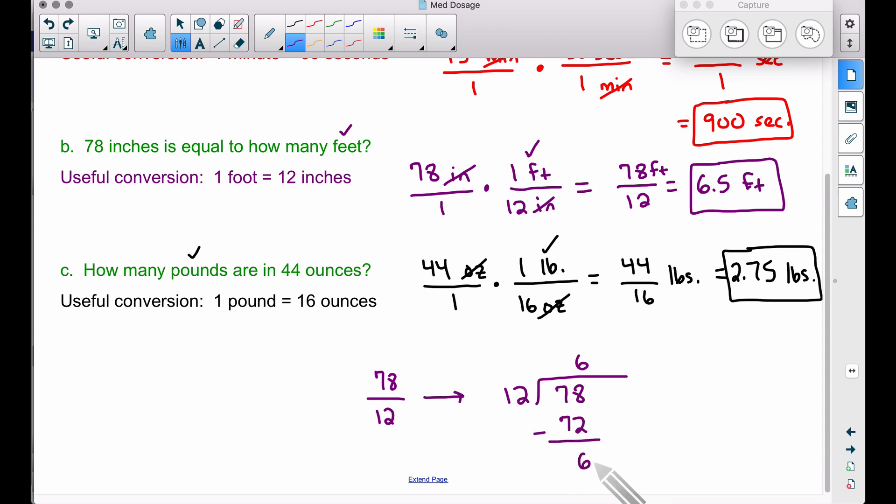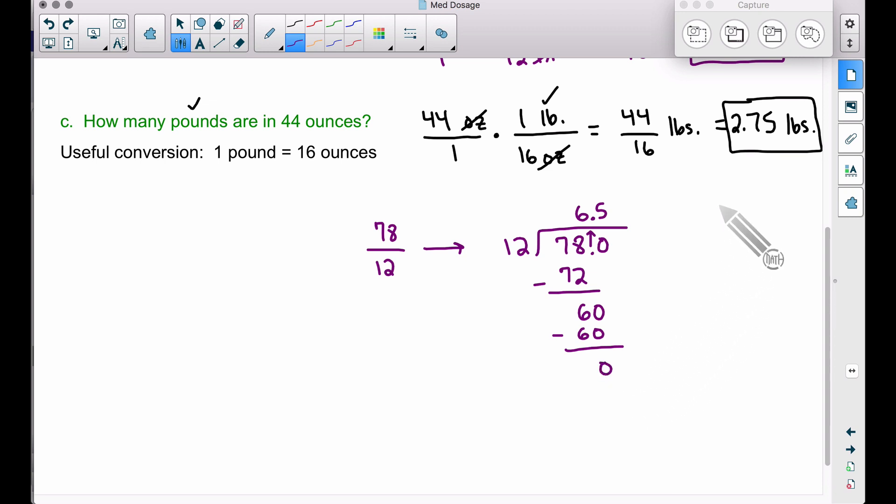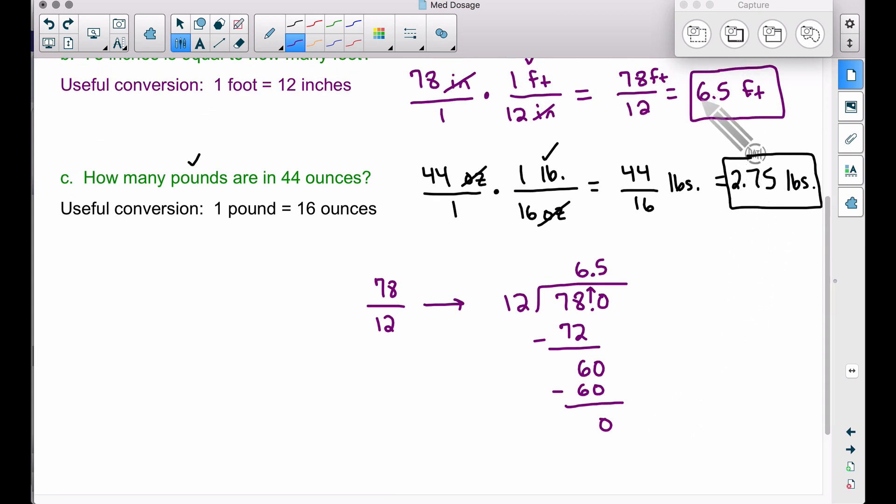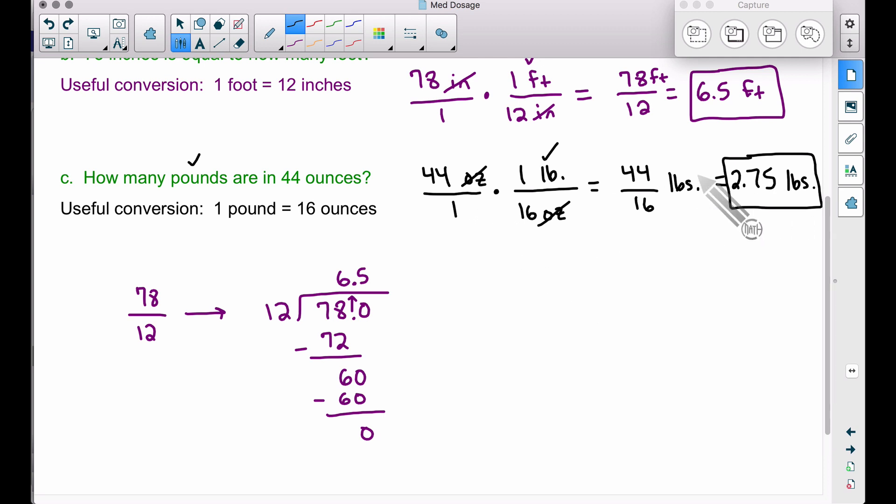I'm going to work with this in decimal form. I'll bring down another zero. 78.0 is the same as 78. Bringing that zero down, 12 goes into 60 five times. We have to bring the decimal up, matching everything up and keeping it lined up. 5 times 12 gives you 60. Subtract for a remainder of zero, and we see 6.5 feet.